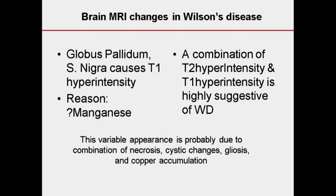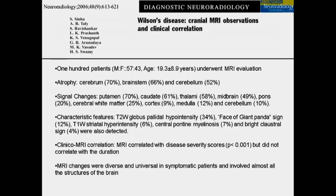In the neurological form of Wilson's disease, we find various combinations of T2 hyperintensity or T1 hyperintensity. This combination in the pallidum and basal ganglia — the combination of hyperintensity and hyperintensity — is highly suggestive of Wilson's. Conventional neuro-Wilson's changes are because of necrosis, cystic changes, gliosis, and copper accumulation.